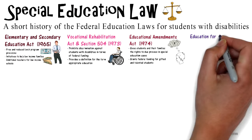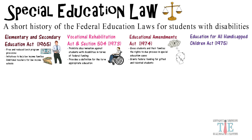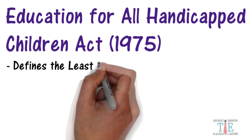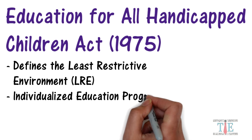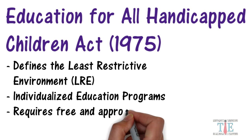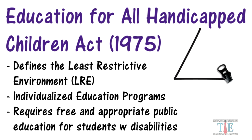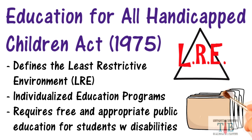The next law is one of the most important: the Education for All Handicapped Children Act of 1975. It defines the least restrictive environment, mostly called the LRE in education, and the IEP — Individualized Education Programs. It requires free and appropriate public education for all, beginning for ages 5 through 18. The least restrictive environment is first defined here, and it is understood that children with disabilities should spend as much time as possible with their non-disabled peers.